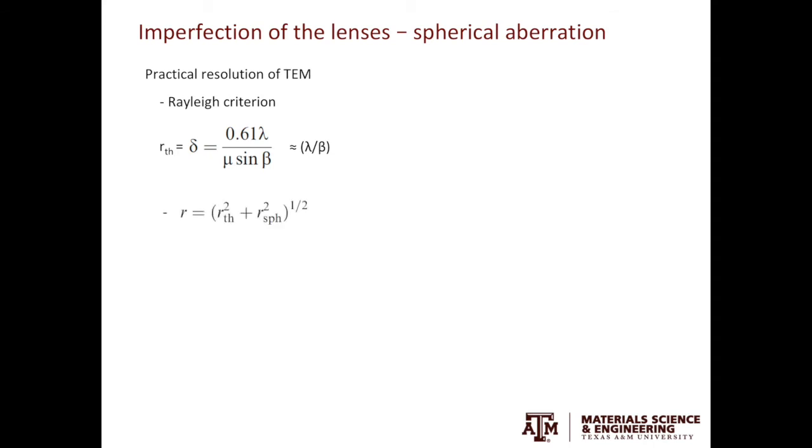When we take the spherical aberration into account, then the practical resolution R is the function of the theoretical resolution and that from the spherical aberration disk R subscription SPH. Substitute what we know into this equation. The theoretical part is lambda over beta, which is shown above in the first equation on this slide. The spherical aberration part is equal to CS, which is the spherical aberration coefficient multiplied by beta cube. Note that we have rewritten R as R beta. Both R in the second equation and R beta in the third equation are the practical resolution of TEM.